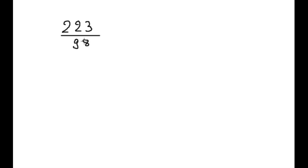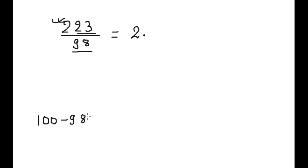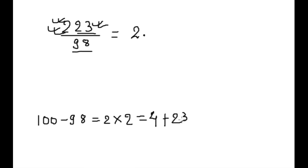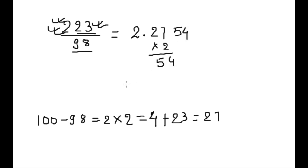Next example: 223 × 98. This is 2-digit, this is 2-digit, so our answer will start with the third digit 2. Next step: 100 minus 98 equals 2, into this 2 equals 4, plus 23 equals 27. We write 27 here, then multiply by 2 giving 54. So 2.2754 is our answer.